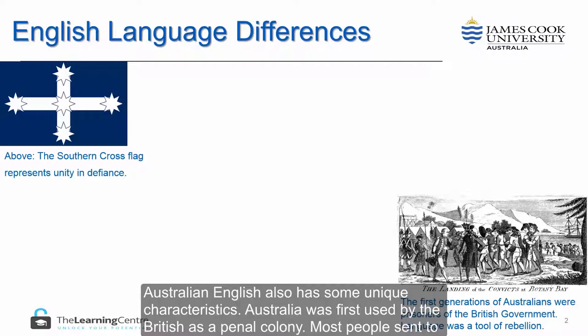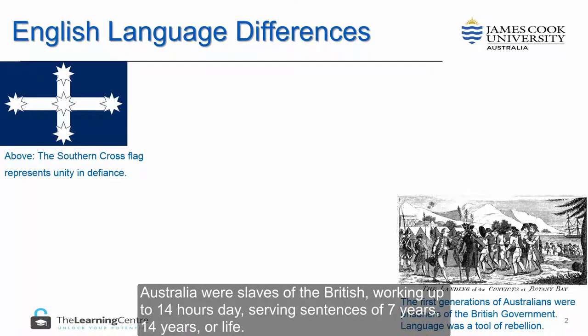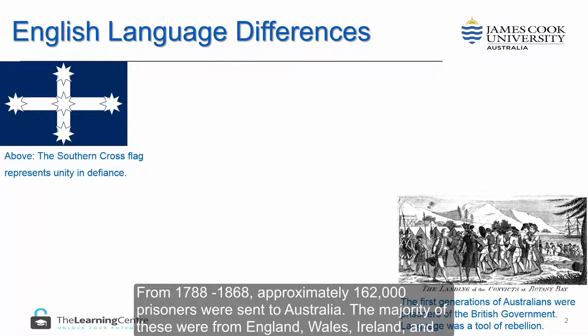Australian English also has some unique characteristics. Australia was first used by the British as a penal colony. Most people sent to Australia were slaves of the British, working up to 14 hours a day, serving sentences of 7 years, 14 years, or life. From 1788 until 1868, approximately 162,000 prisoners were sent to Australia.